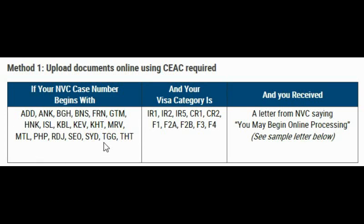If your case number starts with one of those prefixes and your visa category is IR1, IR2 (spouse or children of a U.S. citizen), IR5 (parent of a U.S. citizen), CR1 or CR2 (spouse and children of a U.S. citizen), F1, F2A, F2B (spouse and children of a green card holder), F3 (married child of a U.S. citizen), or F4 (siblings of a U.S. citizen), then you fall in this category.